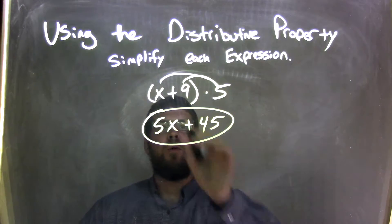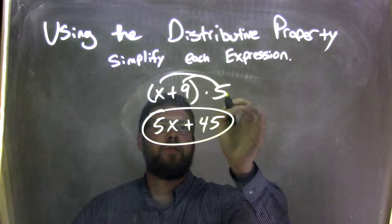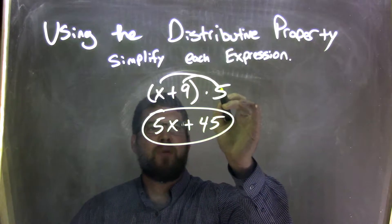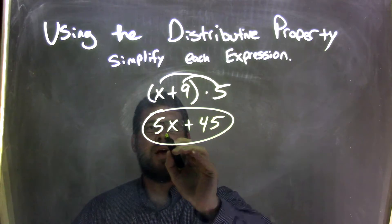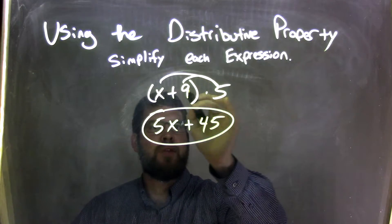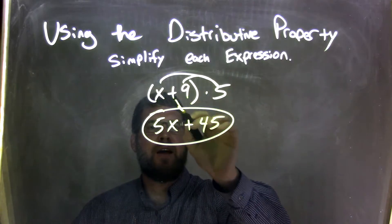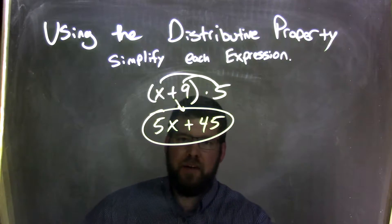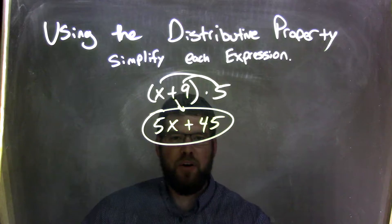So again, let's recap. We have x plus 9 in parentheses times 5 on the outside. We have to distribute the 5. Multiplication: 5 times x gave me 5x, 5 times 9 gave me 45. We brought that plus sign down, and so now we end up with 5x plus 45 as our final answer.